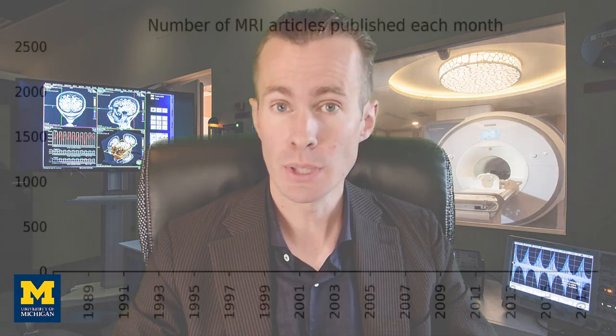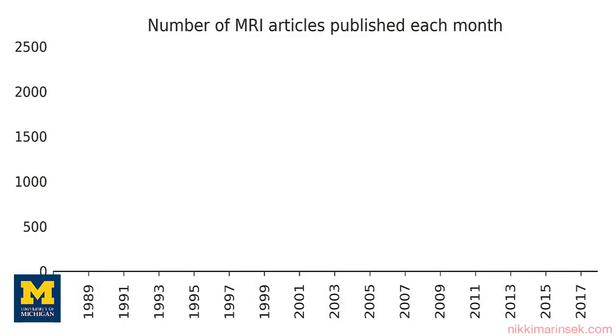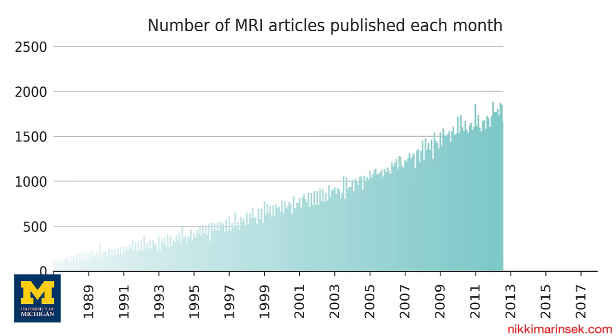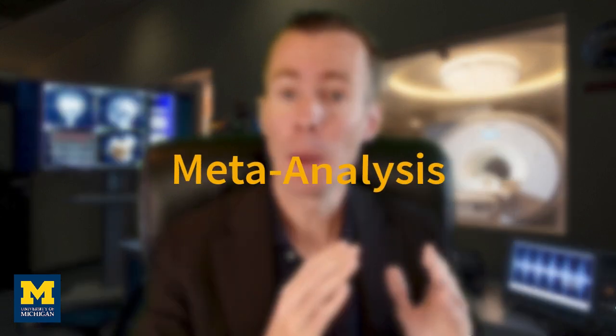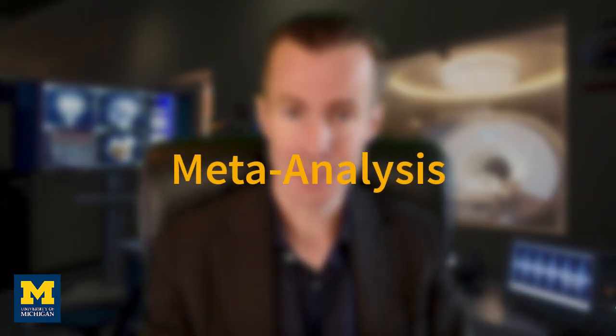Over the past 30 years, fMRI has become more popular and widely used, with several thousand studies published every year. Before you begin your experiment, you may be curious about where these other studies have found their effects, and you can do so with a technique called meta-analysis.